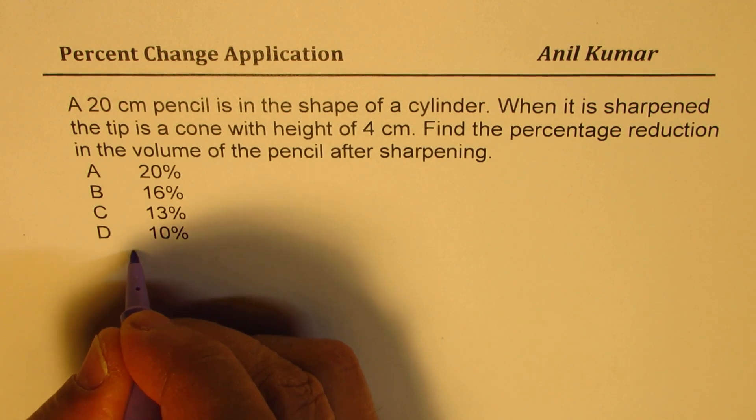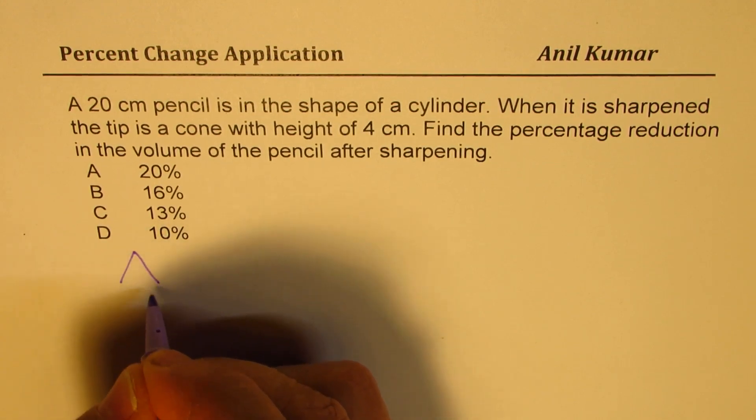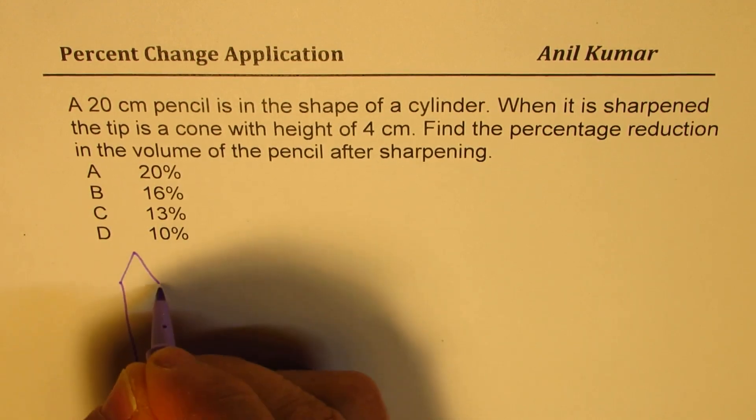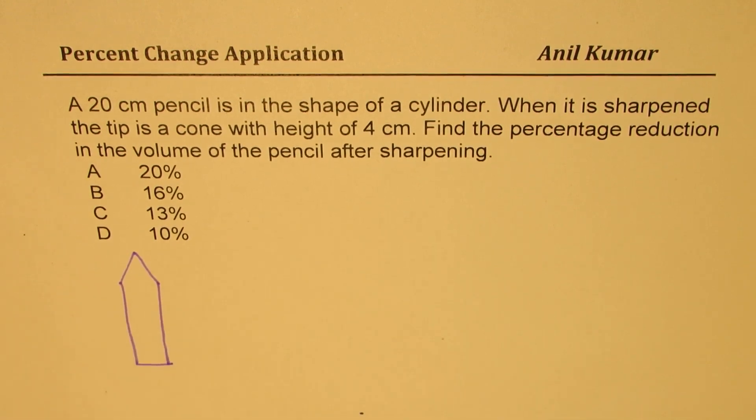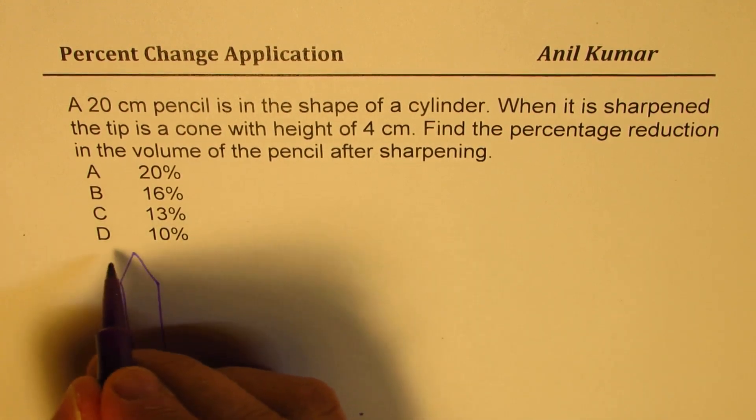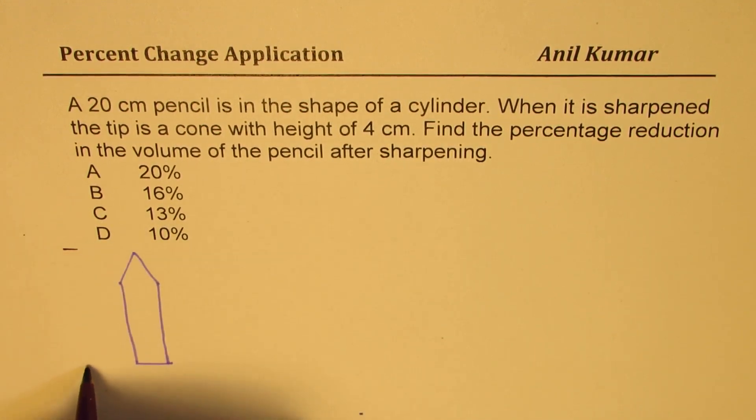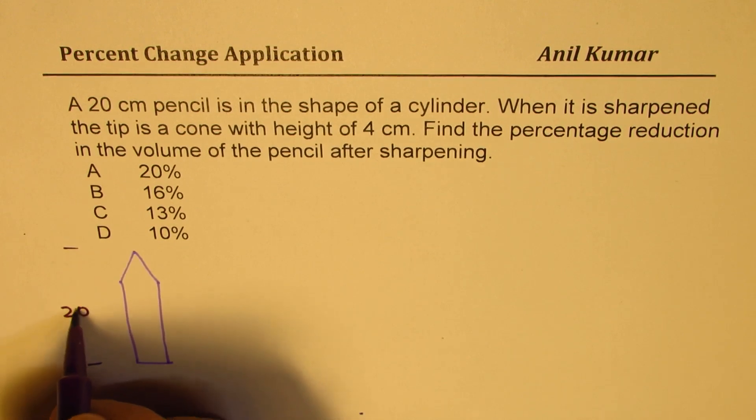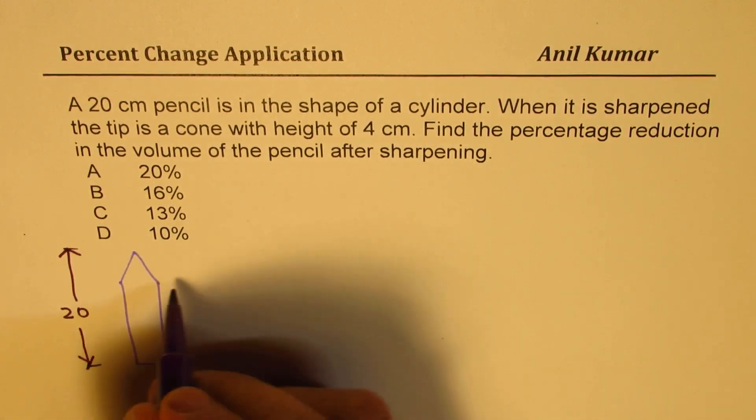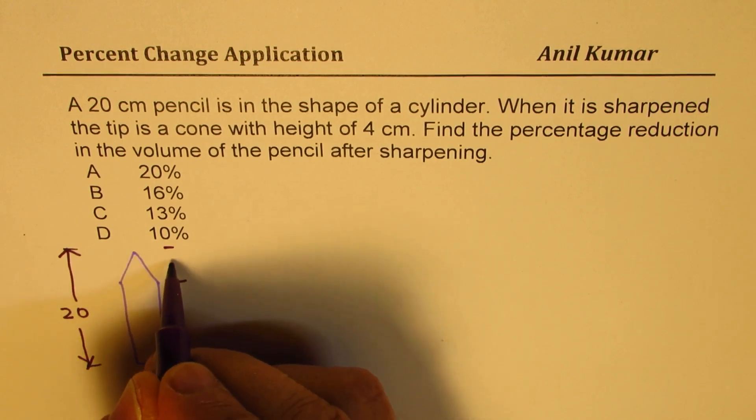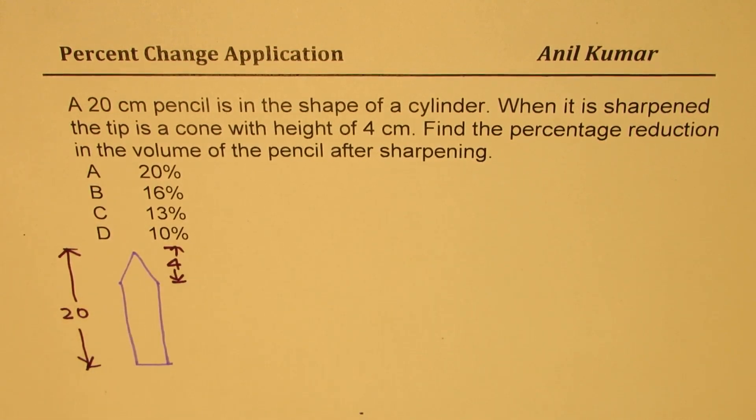So basically we have a pencil here with a cone, kind of like this. This is the cylindrical part, and what we're given in this case is that the total height of this pencil is 20, and this cone portion is 4. We need to find the change in volume.